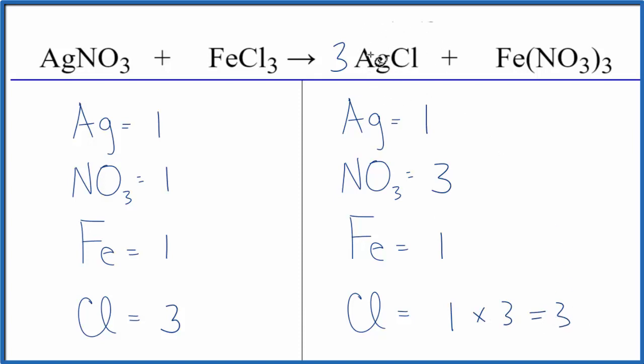And then the three applies to everything, so we have one Ag times the three. Now we have three Ags. But that looks okay, because I have one Ag here and three here.